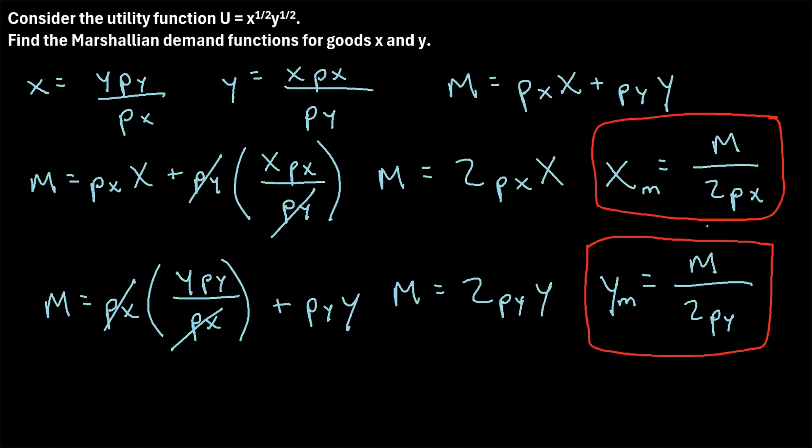So that's the general process of how you can find the Marshallian demand functions when you are given a utility function.